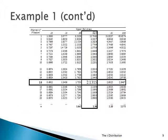This shows how we found the 2.1315. You need a column — we wanted 0.025. We need the degrees of freedom — that's the row, 15. And notice they intersect at 2.1315. Very easy to use this table.